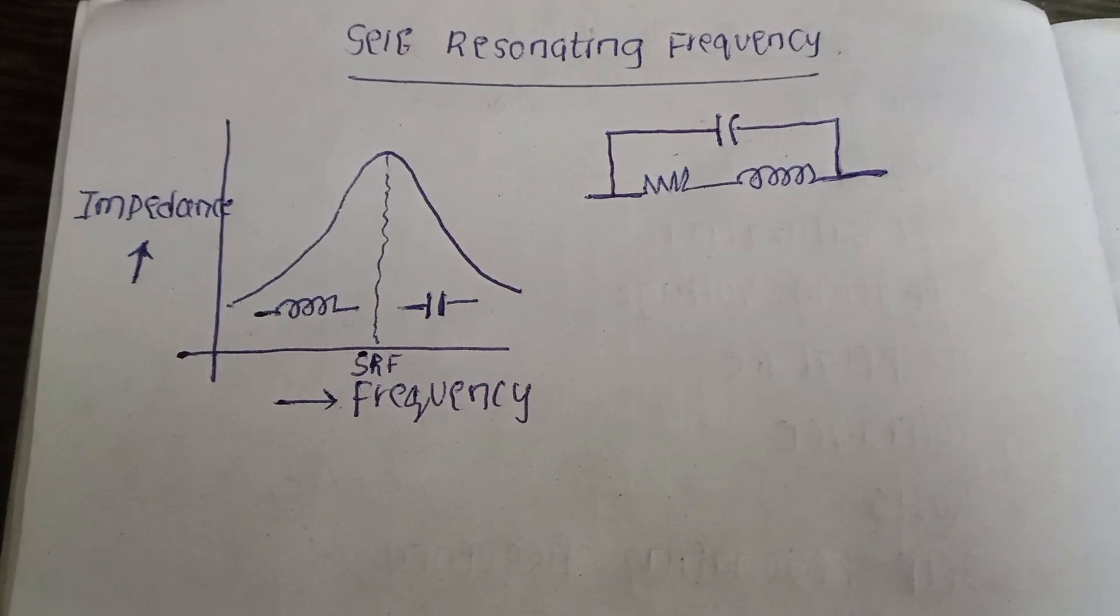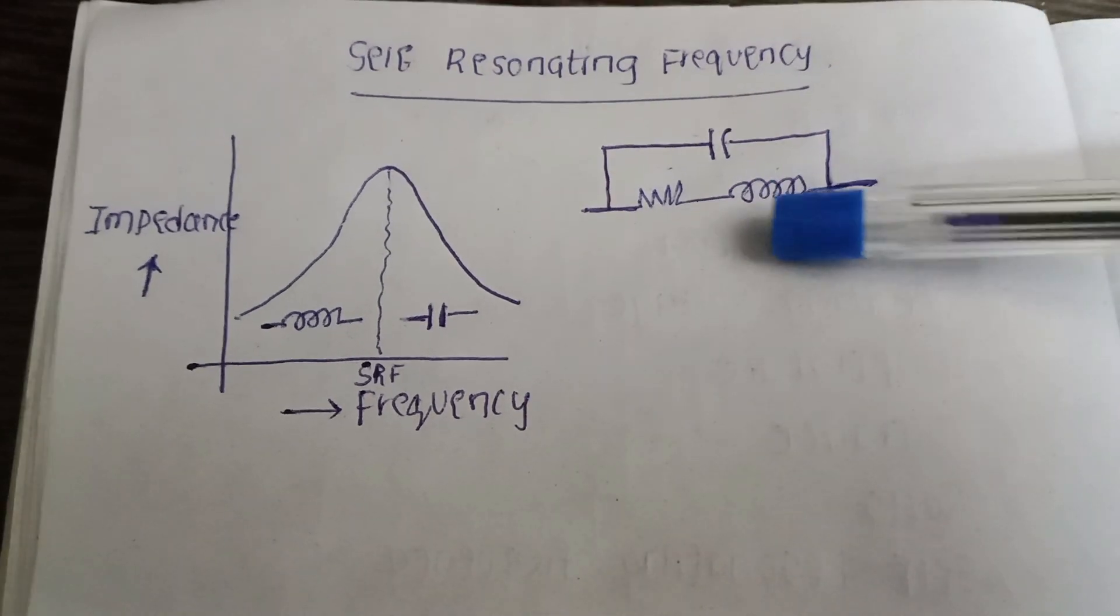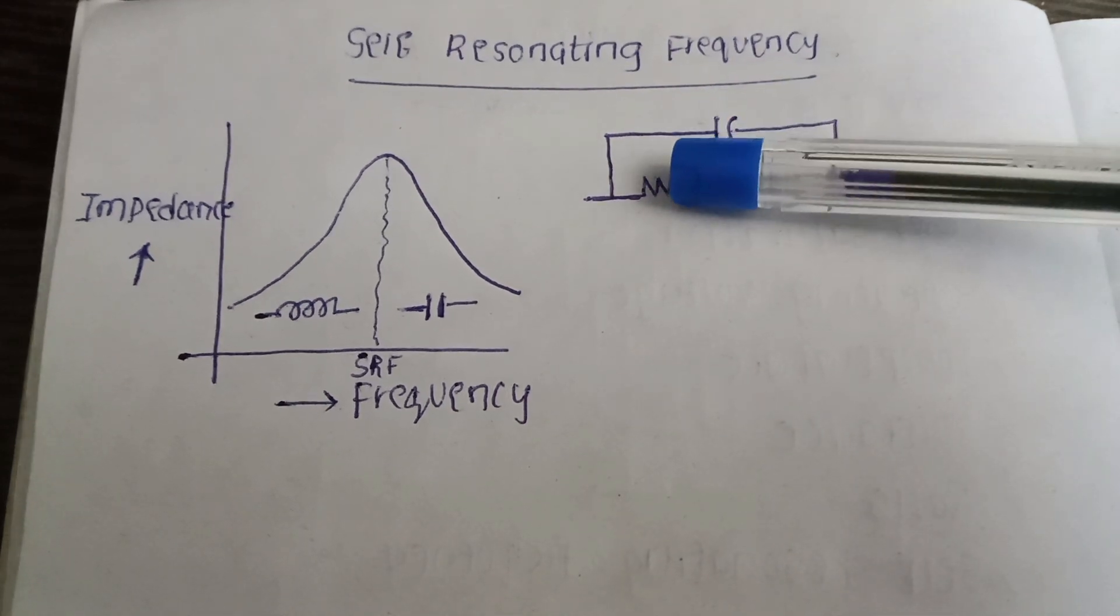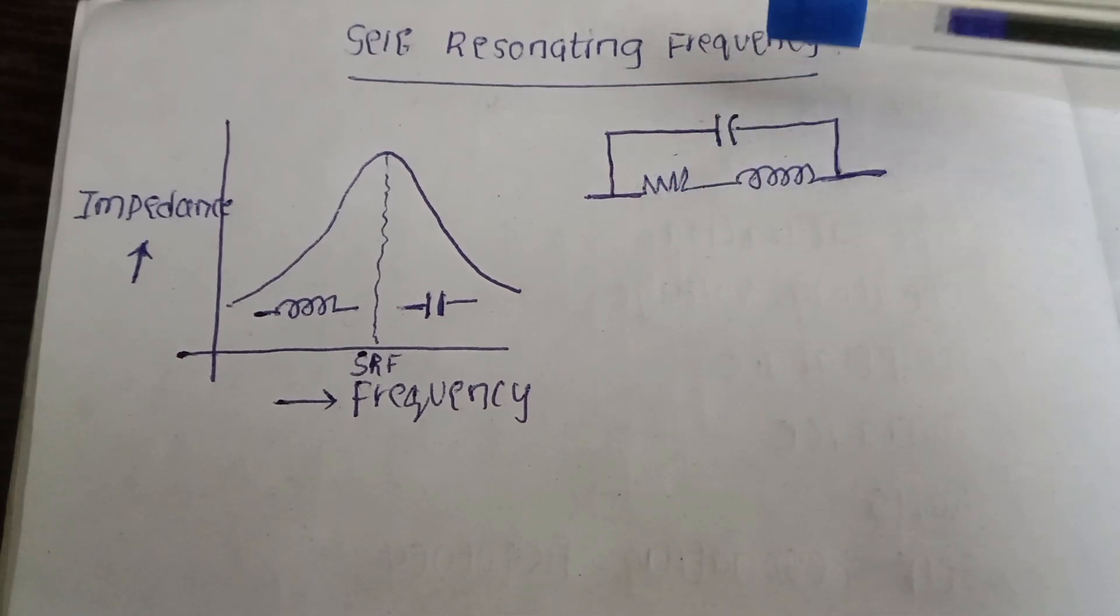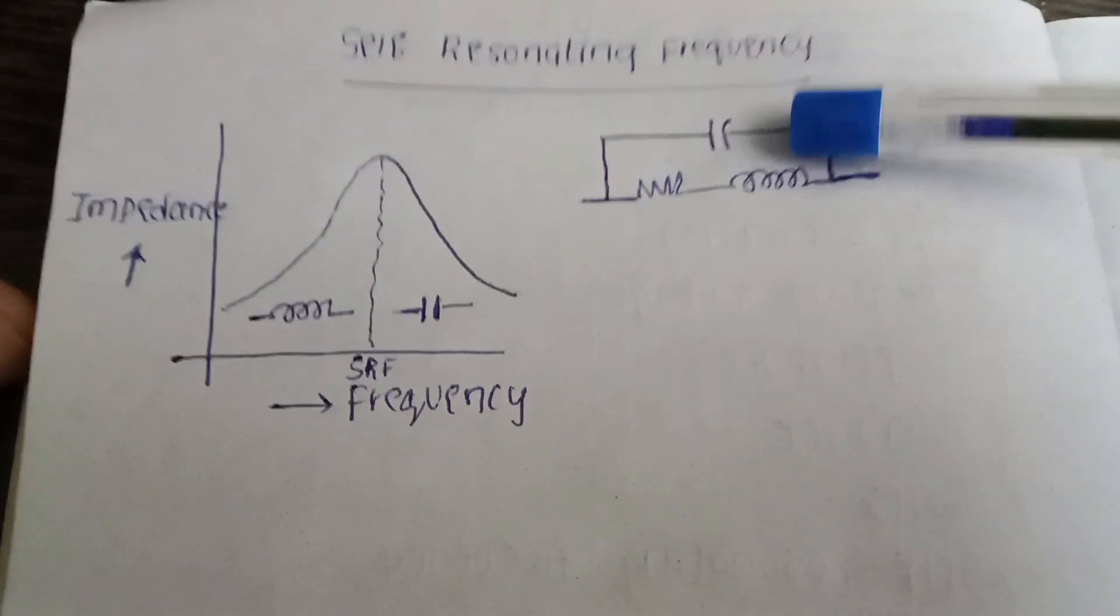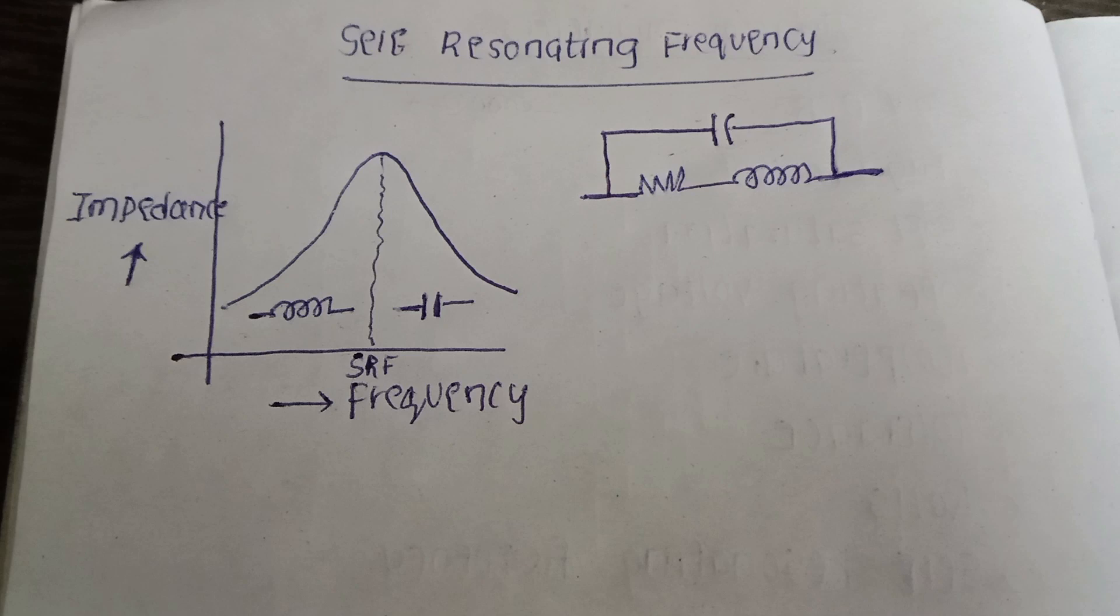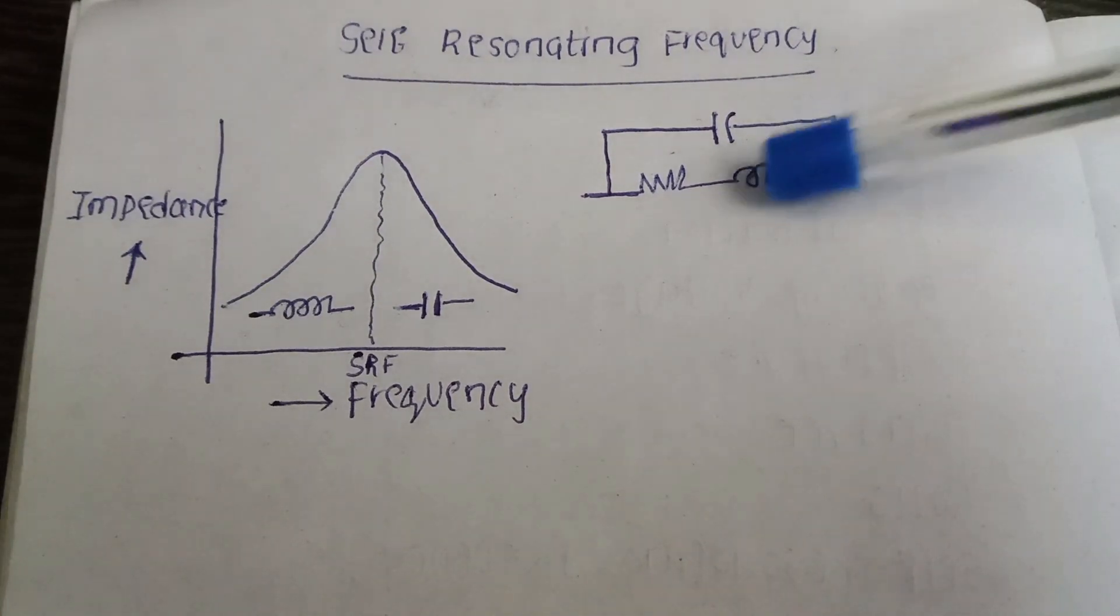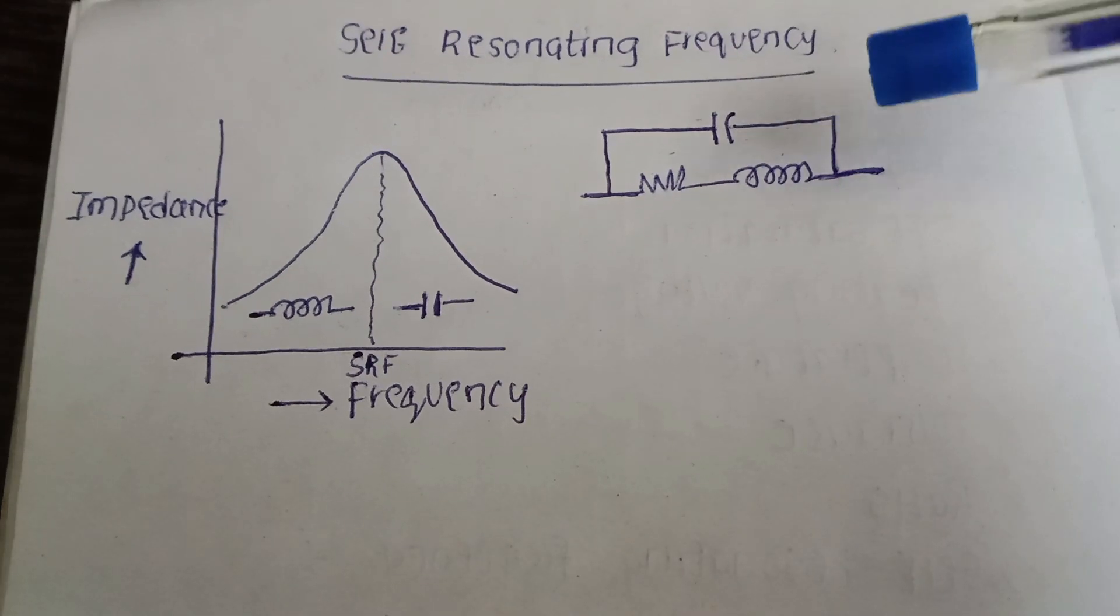Hello all, we see an equivalent circuit of an inductor here where we have a resistance in series and then we have capacitance between the leads of the inductor. So this is the equivalent circuit of inductance.